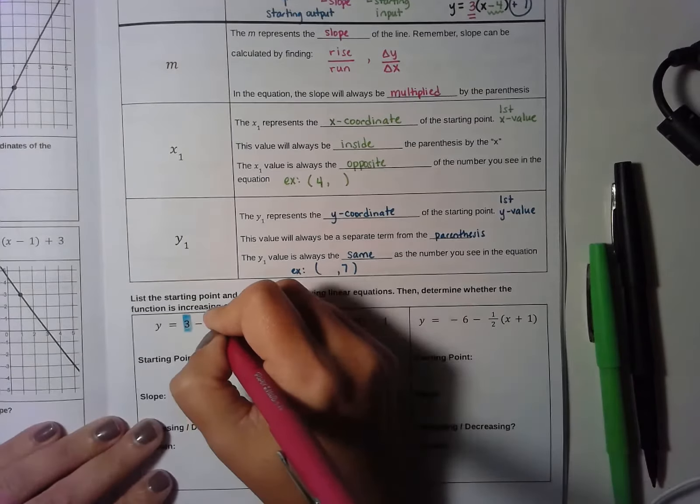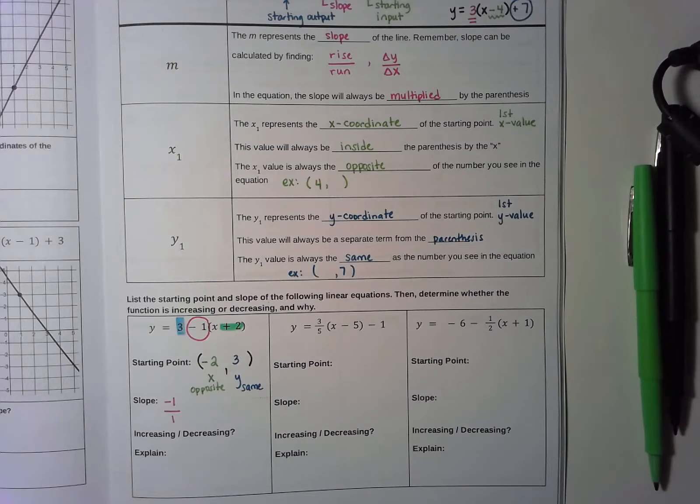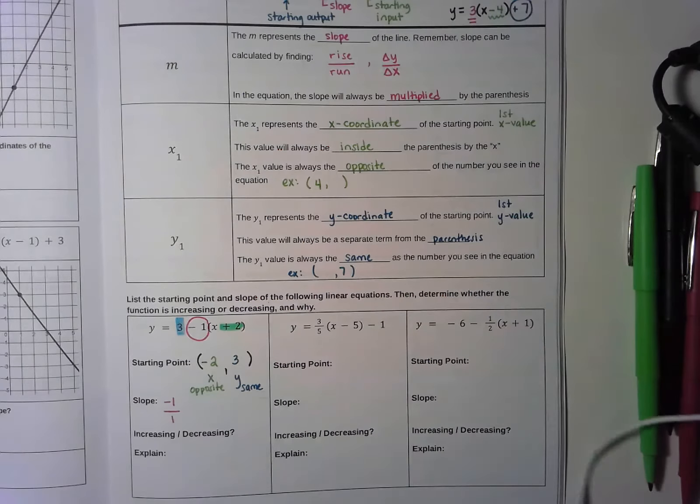Since slope is rise over run, if I wanted this to look like a fraction to make graphing easier, I could write negative 1 over 1, because dividing by 1 doesn't change the value. Since the slope is negative, this is a decreasing function — the graph will be going downhill. If the slope were positive, it would be an increasing function going uphill.